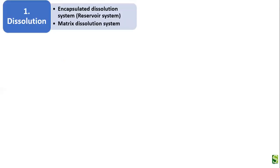The dissolution-based drug delivery system is of two types. The first is the encapsulated dissolution system, which is also called the reservoir system. The second one is the matrix dissolution system, which is also known as the monolithic dissolution system.